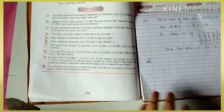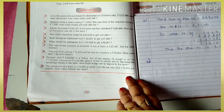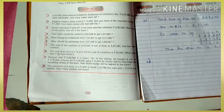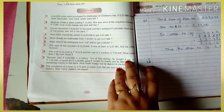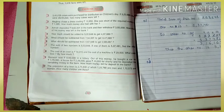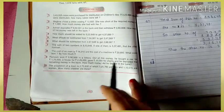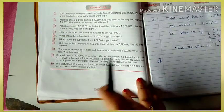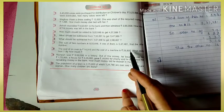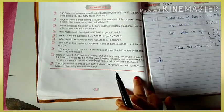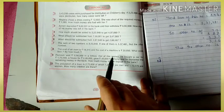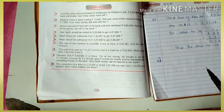Let's see question number 8. The cost of an oven is 14,315 and the cost of a machine is 29,800. Which costs less? The oven costs less than the machine. There are two questions here — first, which costs less: the oven. Second, by how much? You will subtract 29,800 minus 14,315. The cost of the oven is less, and by that difference amount.